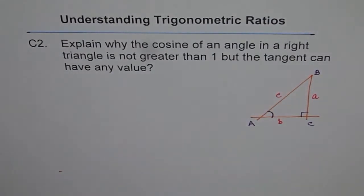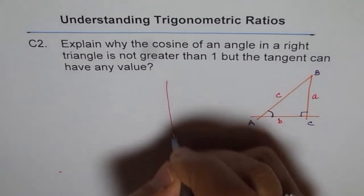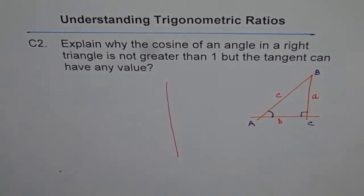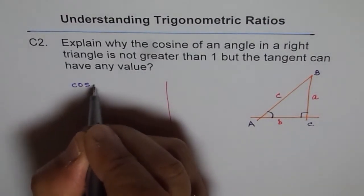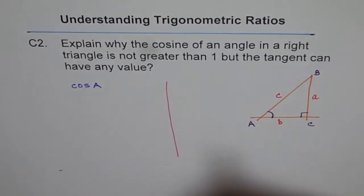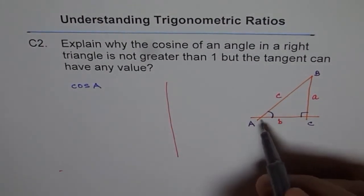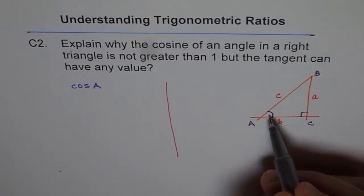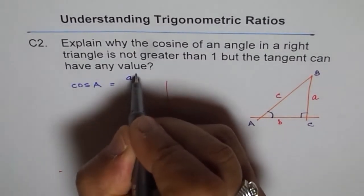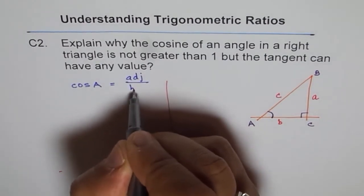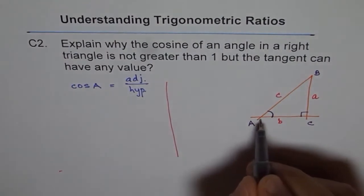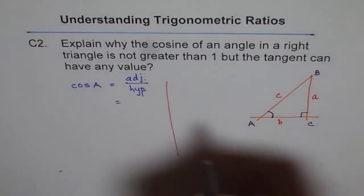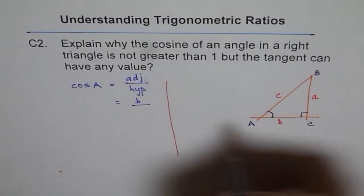We want to explain why the cosine of an angle in a right triangle is not greater than one. There are basically two parts: first, consider what is cosine of A, and then we'll see whether it can be greater than one. So what is cosine of A? Cosine is adjacent over hypotenuse.